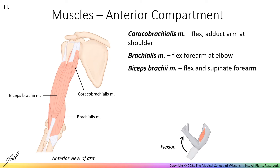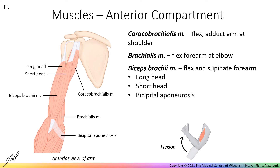Finally, is the biceps brachii muscle, which has two heads. The long head has an attachment to a bump just superior to the glenoid fossa, and the short head attaches to the coracoid process of the scapula near the coracobrachialis. Note that long versus short heads of a muscle refer to the length of the tendon and not the muscle belly. Both heads of the biceps insert on the radial tuberosity. Additionally, an aponeurosis, which is a broad, flat tendon, reaches medially superficial to some of the forearm flexors. The biceps function to flex and supinate the forearm.